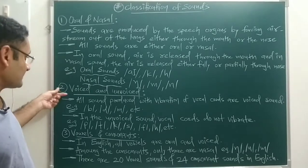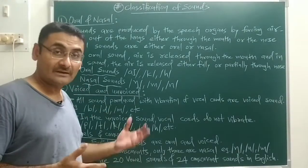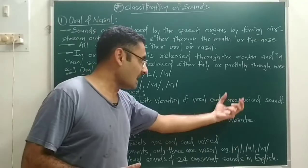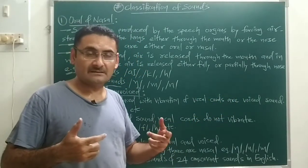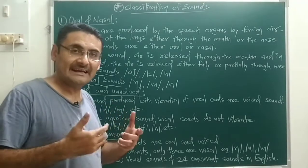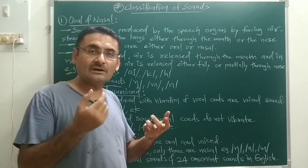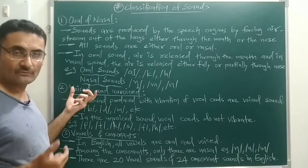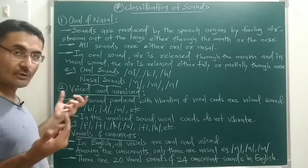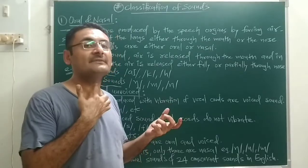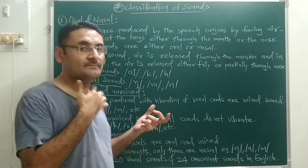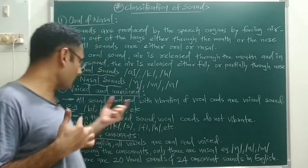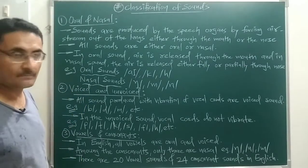Next is voiced and unvoiced sound. Voiced sounds are all sounds produced with the vibration of the vocal cords. That means when you release air from your lungs and at that time your vocal cords vibrate, such a sound is known as a voiced sound. The vocal cord — which is your Adam's apple — will vibrate when you release the air stream. If you can feel that vibration, the sound is a voiced sound.